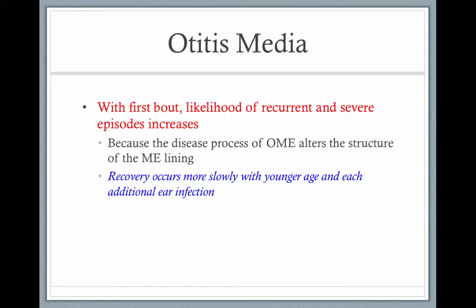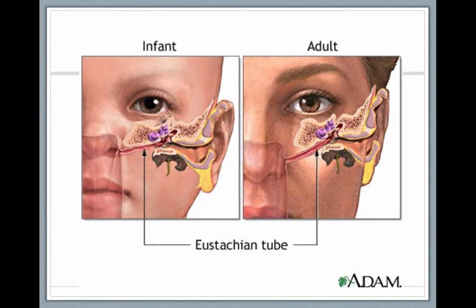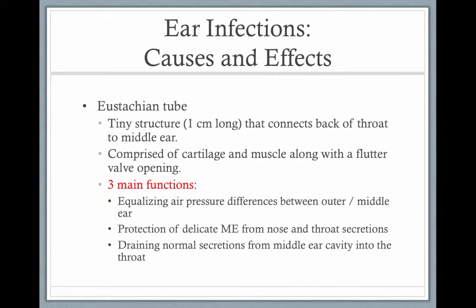With the first bout, the likelihood of recurrent and severe episodes increases. Otitis media is caused by malfunctioning eustachian tubes — a viral infection like a cold or upper respiratory infection gets blown into the middle ear space. Therefore, ear infections are more prevalent in winter when a child is more likely to get a cold. Looking at a diagram, the infant eustachian tube is on a more horizontal plane while the adult's is more vertical. Infants are more likely to take a cold and blow it into their middle ear space than an adult with a longer, more narrow face.